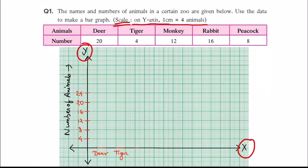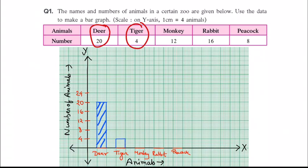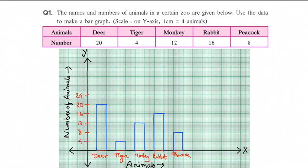On the x-axis we have deer, tiger, monkey, rabbit, and peacock. For deer there are 20, so we draw a bar up to 20 and shade it. Tiger has 4, so we draw a bar up to 4. Monkey is 12, rabbit is 16, and peacock is 8. This is what your final bar graph looks like.